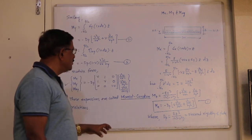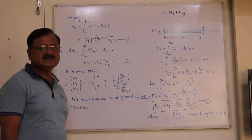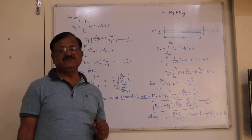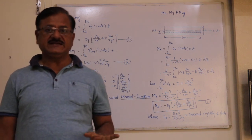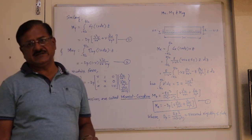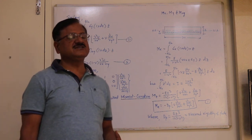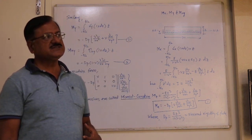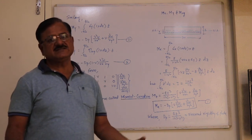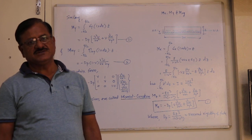In the next discussion, we will see the various types of plate bending elements — basically rectangular elements and triangular elements, including different types of each. We will also see how the displacement function is assumed within the element using Pascal's triangle, and then the derivation of the element stiffness matrix. This part will be covered during the next lecture. Thank you.